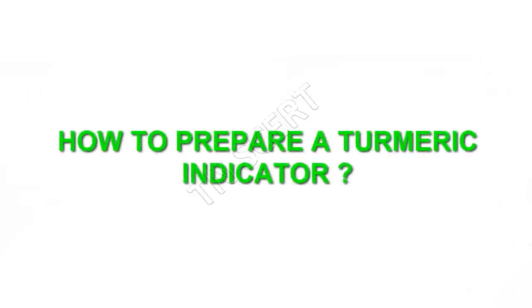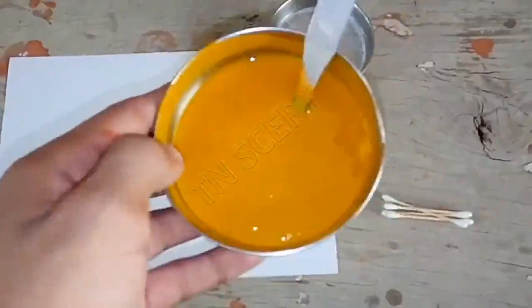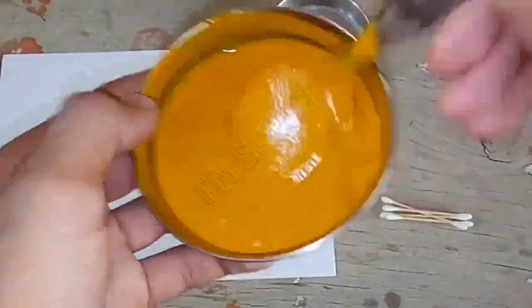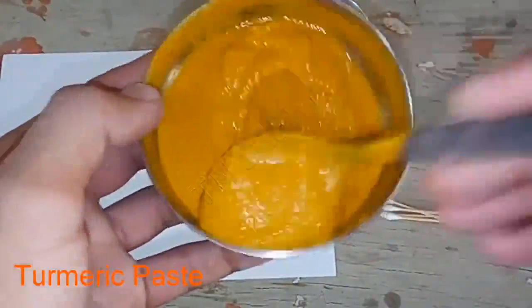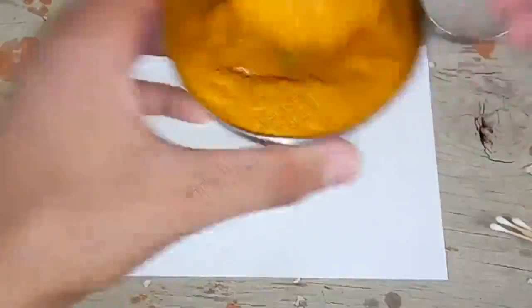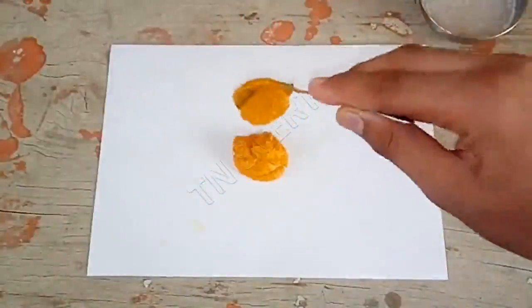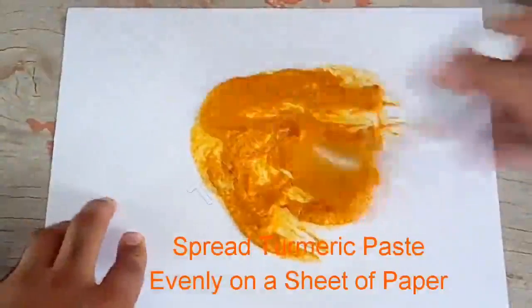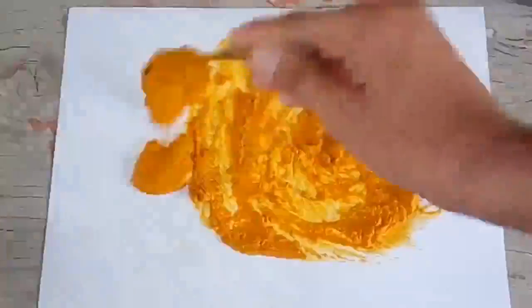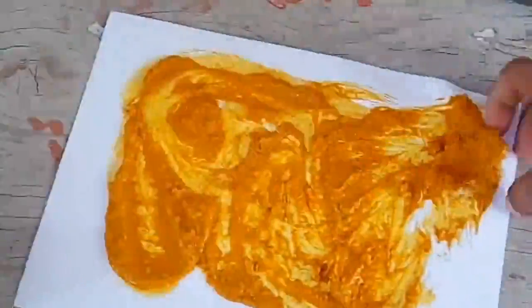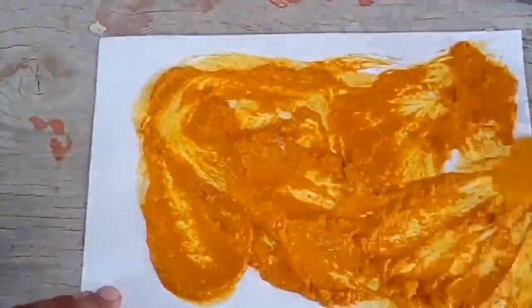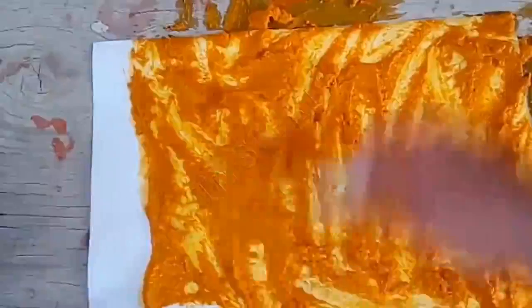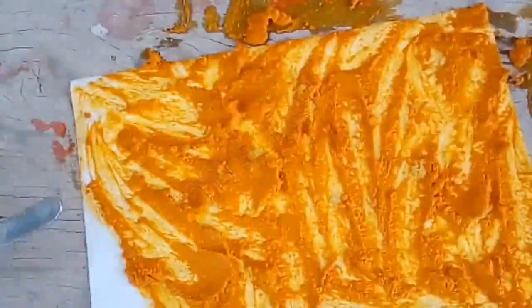How to prepare a Turmeric Indicator: Add a small amount of water to turmeric powder and prepare a turmeric paste. Apply it on blotting or filter paper and dry it. These yellow strips can be used as an acid-base indicator.